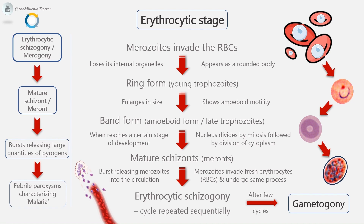The rupture of mature schizonts releases large quantities of pyrogens, which is responsible for the febrile paroxysms characterizing malaria. The interval between the entry of sporozoites into the host and the earliest manifestation of clinical illness is the incubation period. This differs from the pre-patent period, which is the time taken from entry of the sporozoites to the first appearance of malaria parasites in peripheral blood. In Plasmodium falciparum, erythrocytic schizogony always takes place inside the capillaries and vascular beds of internal organs. Therefore, in Plasmodium falciparum infections, schizonts and merozoites are usually not seen in the peripheral blood.